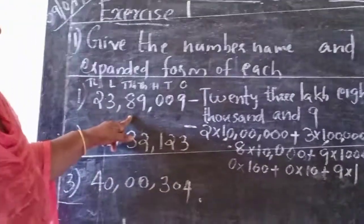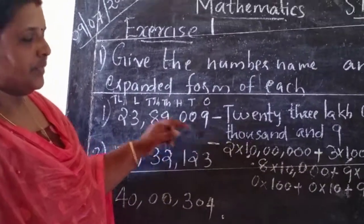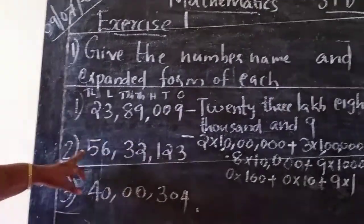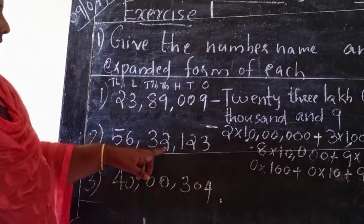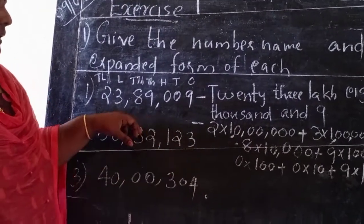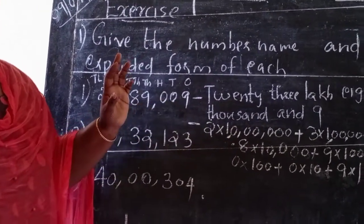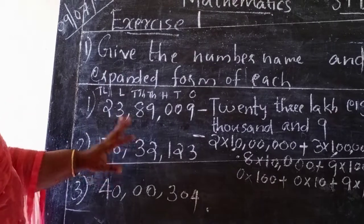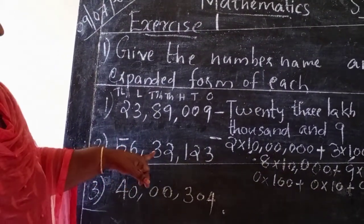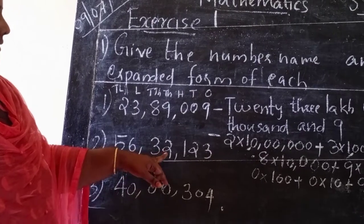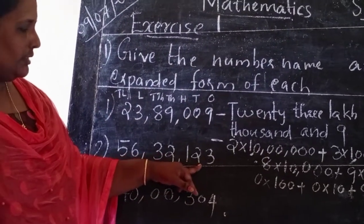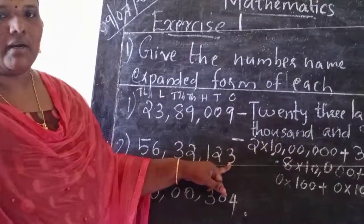The second question: this number is read as 56 lakhs 32,123. The expanded form is: 5 × 10 lakhs + 6 × 1 lakh + 3 × 10,000 + 2 × 1,000 + 1 × 100 + 2 × 10 + 3 × 1.